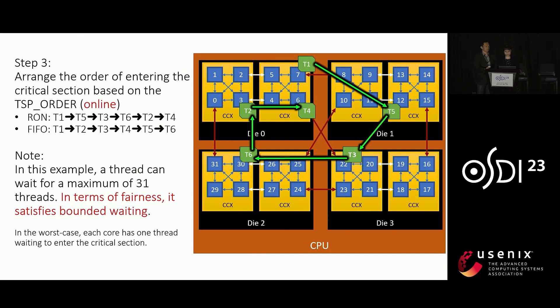It is important to note that in this example, a thread can wait for a maximum of 31 slots, satisfying the bounded waiting property, which ensures fairness in the worst case.